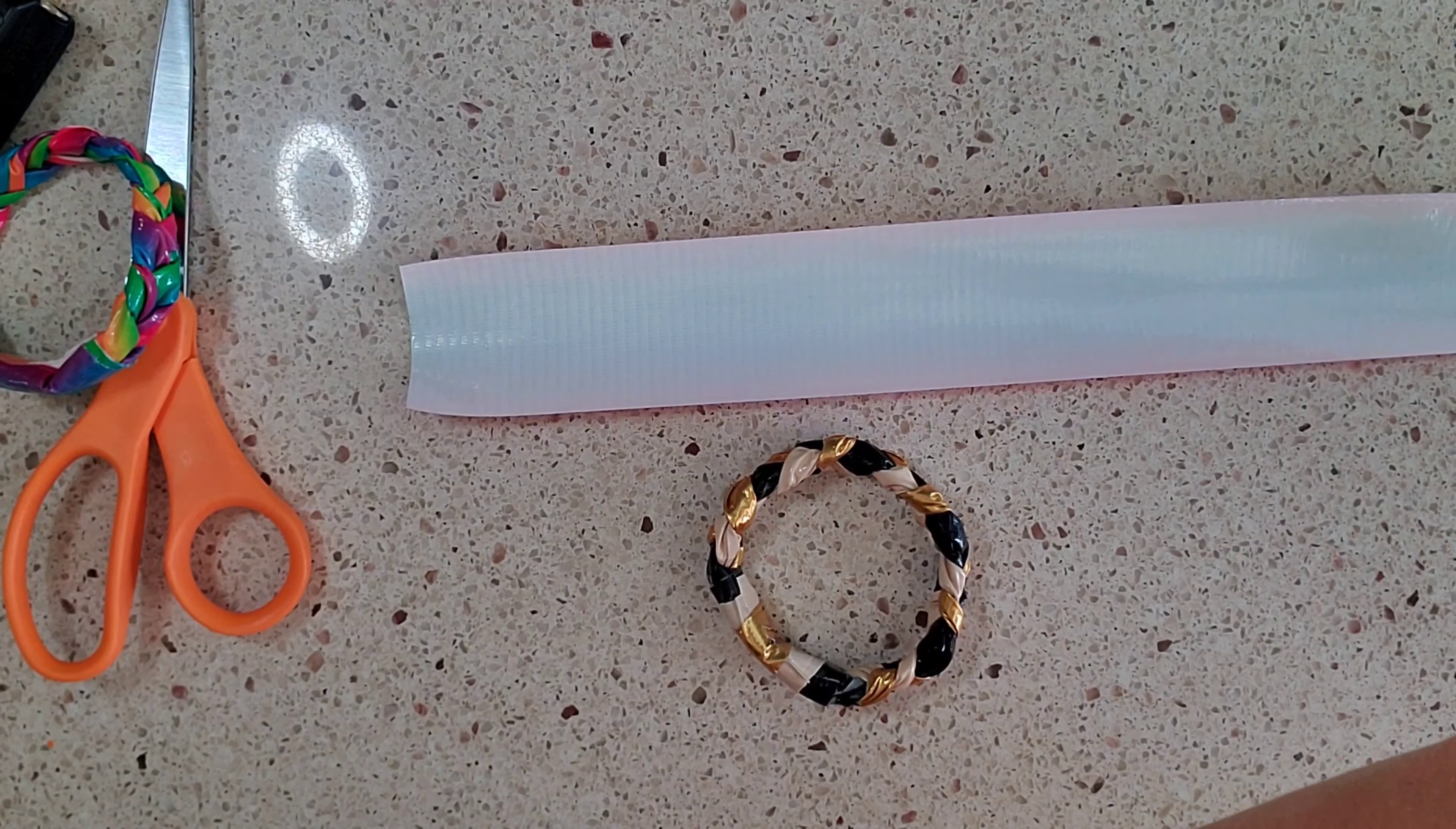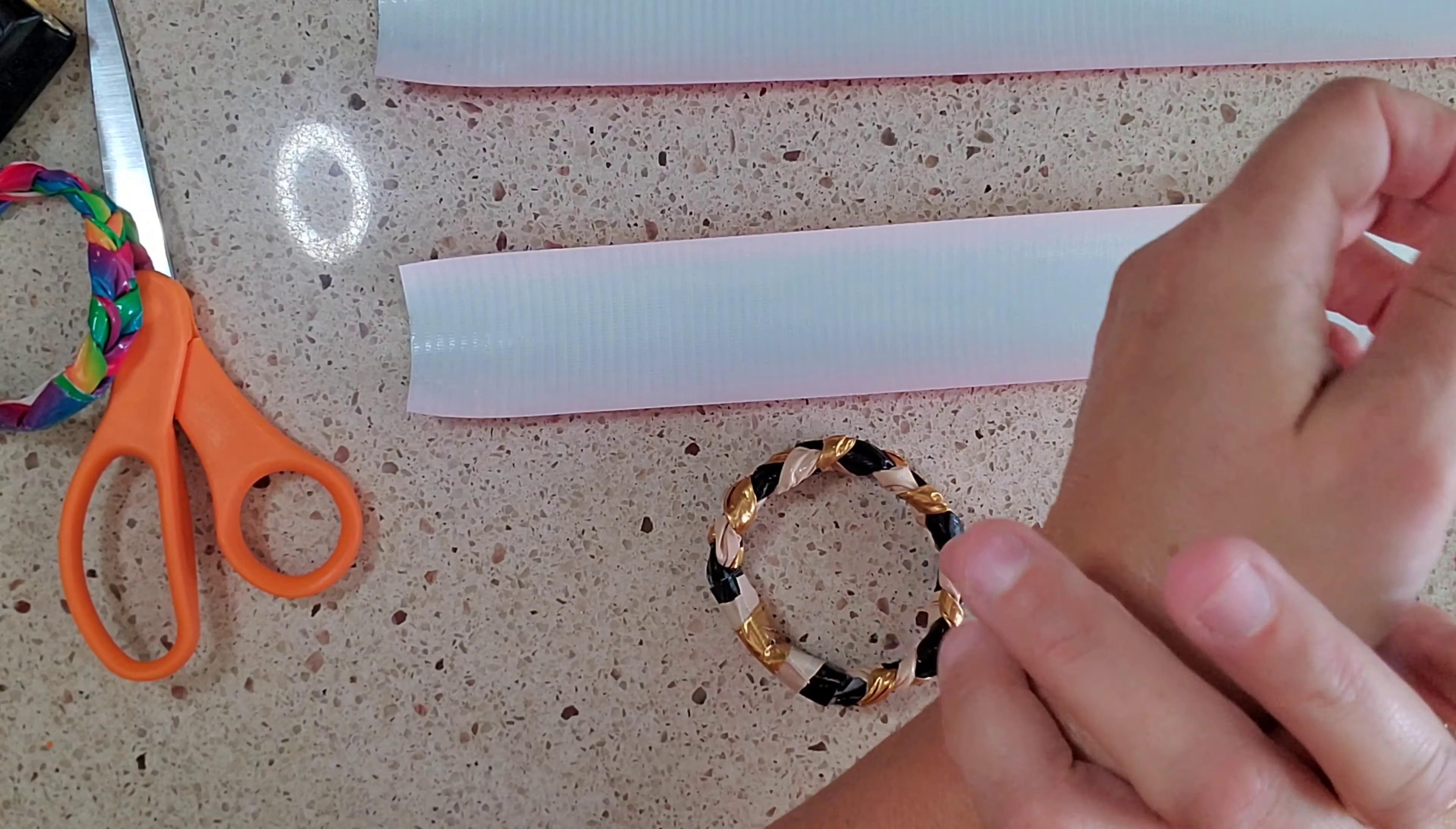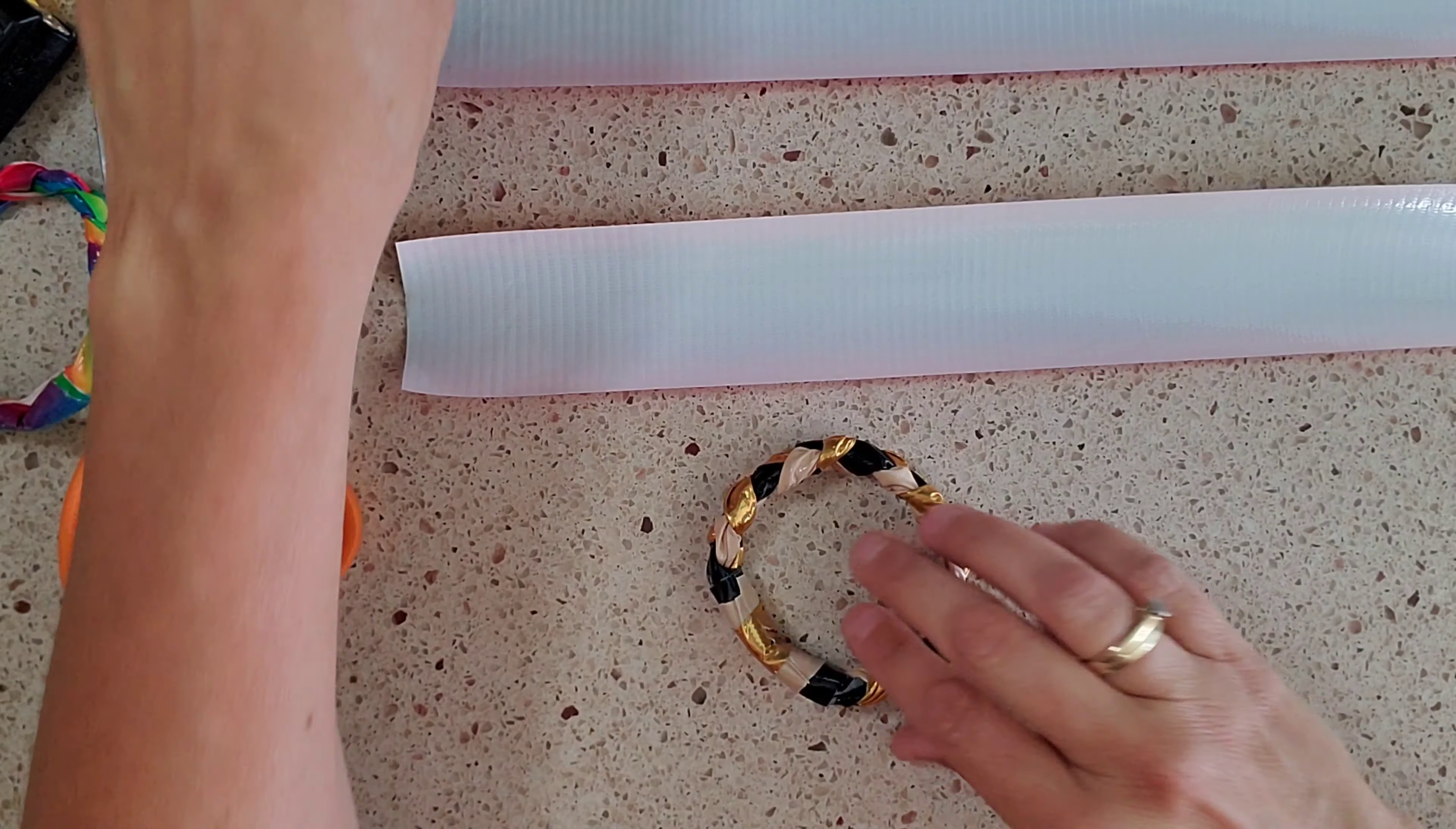I had cut two already just to show you. So those are about twelve inches and this is if you have a six inch wrist, twelve inches would be good for the tape. If you have a seven inch wrist then you would probably do fourteen inches and so on. Just keep adding two inches each time.